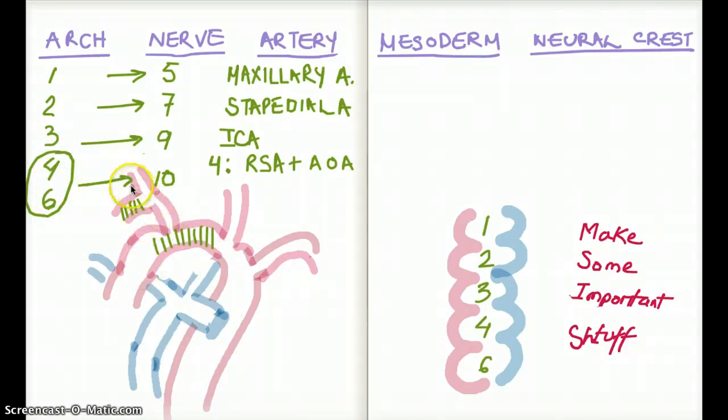These two structures are going to arise from brachial arch 4. Notice that this is the internal carotid, the right internal carotid. This is the left internal carotid. This is the left subclavian. This is the pulmonary artery until here. And this is the patent ductus.